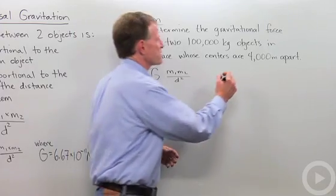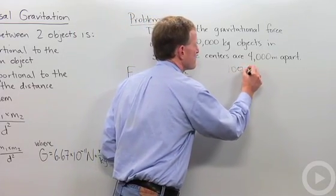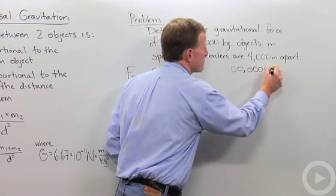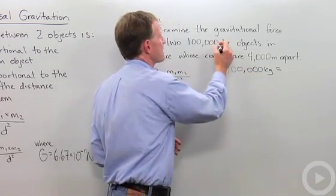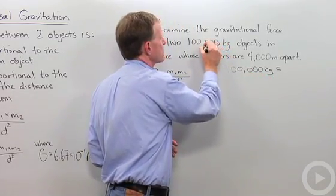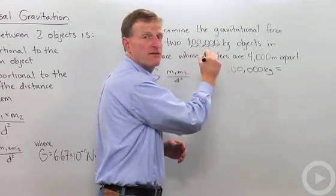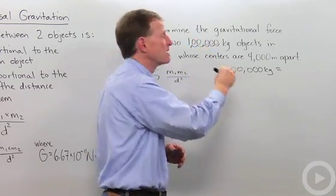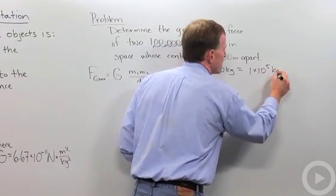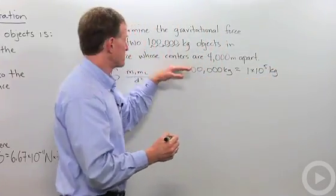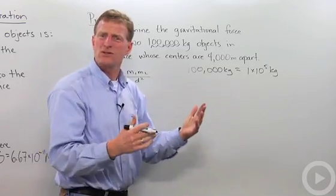So let's first say 100,000 kg. I want to convert that into scientific units and I can say that that equals 1, 2, 3, 4, 5, or 1 times 10 to the 5th kg. So 1 times 10 to the 5th kg is the scientific notation for that unit. It gets rid of all the zeros.